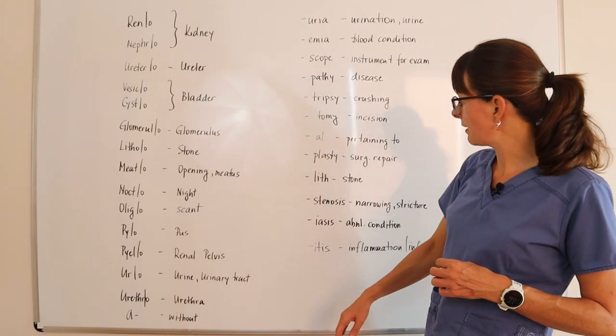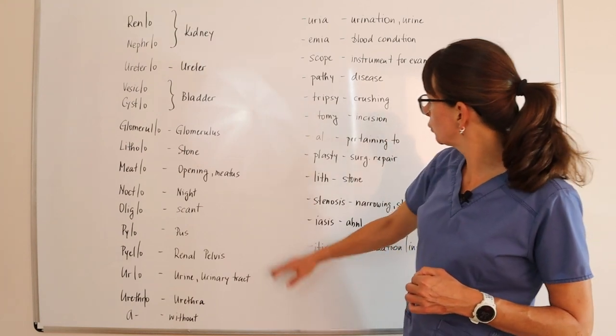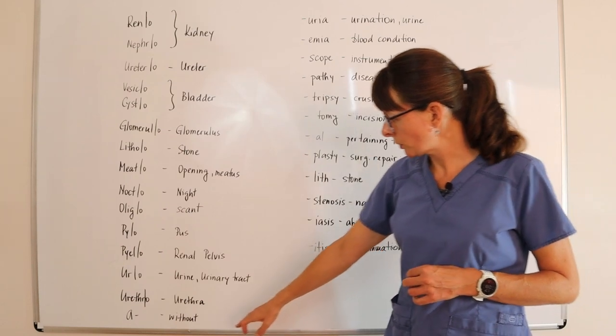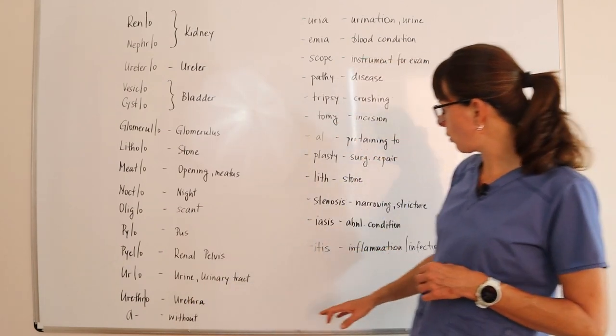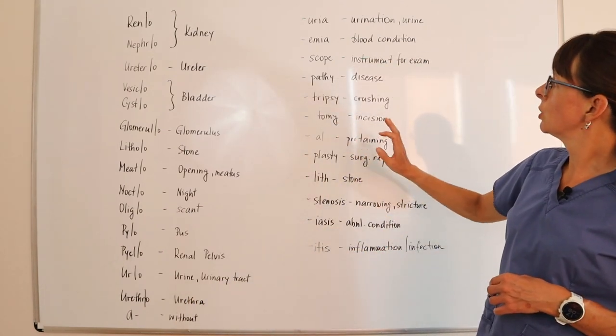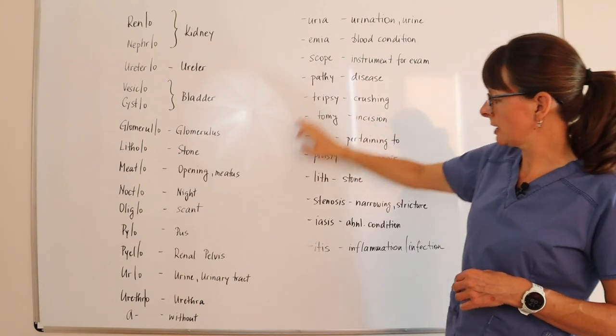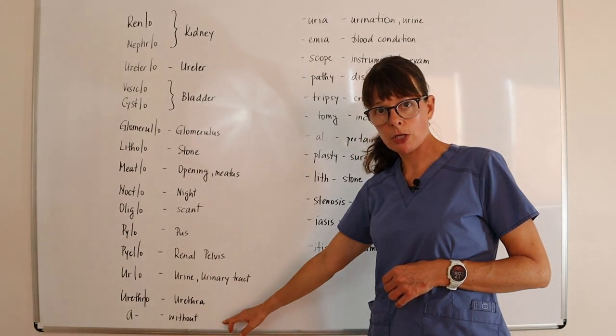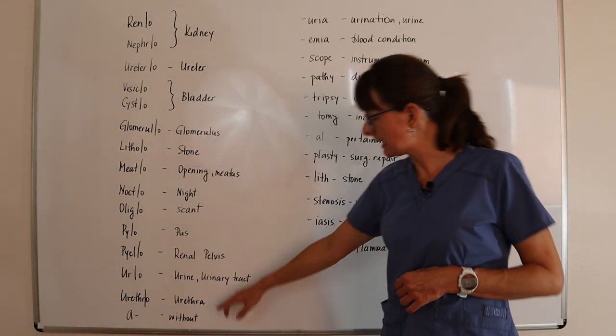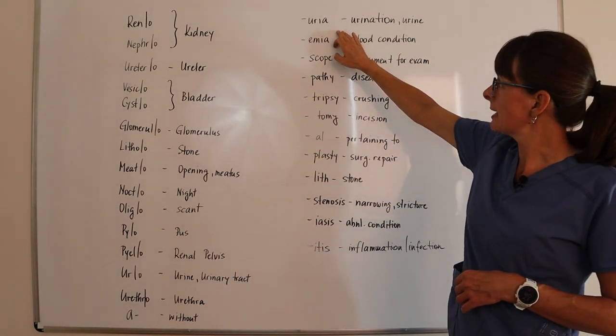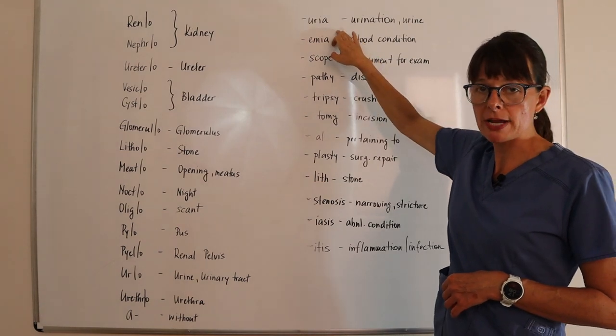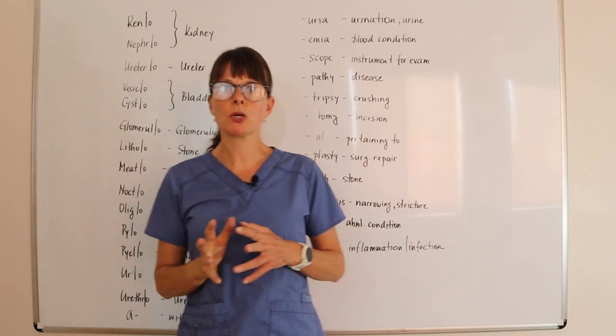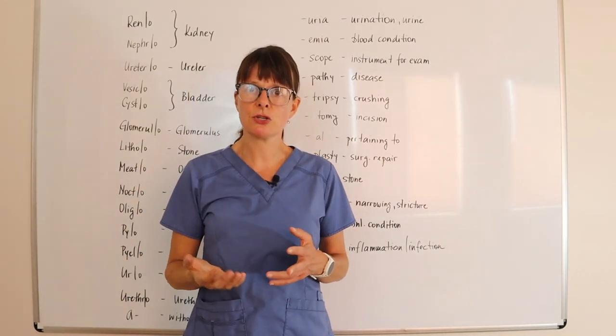Uro: we could have urotomy, an incision of the urinary tract, or urethroscope, an instrument going into the urethra. And then a- without—I mentioned this particularly because a- and -uria means without urination, so no urine flow at all. These are some of the most important terms that pertain to the urinary tract.